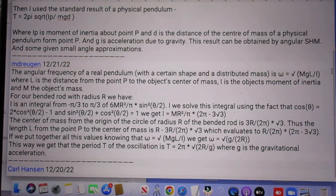For our bended rod with radius R we have I as an integral from minus pi over 3 to plus pi over 3. And he mentions the equation which I will not read but you can see it. If we solve this integral using the fact that cosine theta, and then again he shows an equation which is quite obvious but I will let you read it. I will not read it. We get I is MR squared divided by pi times 2 pi minus 3 square root 3.